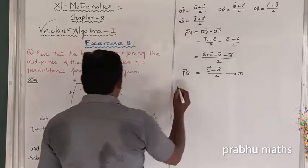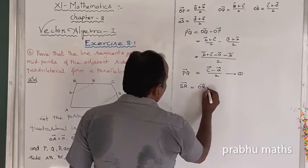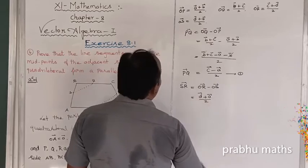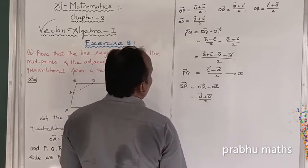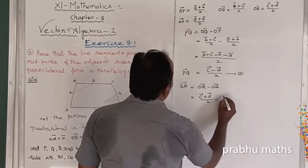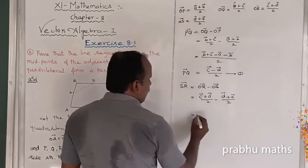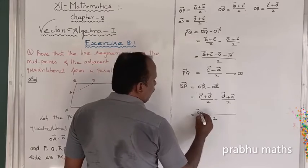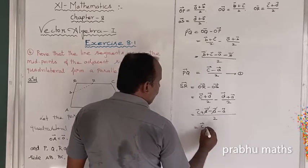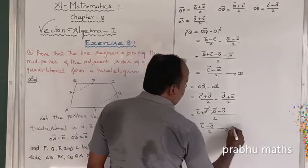Next, the second adjacent side midpoint vector is SR. SR vector equals OR vector minus OS vector. OR vector equals (C vector + D vector) / 2, and OS vector equals (D vector + A vector) / 2. So SR vector equals (C vector + D vector − D vector − A vector) / 2. The D vectors cancel, giving SR vector equals (C vector − A vector) / 2. This is equation 2.